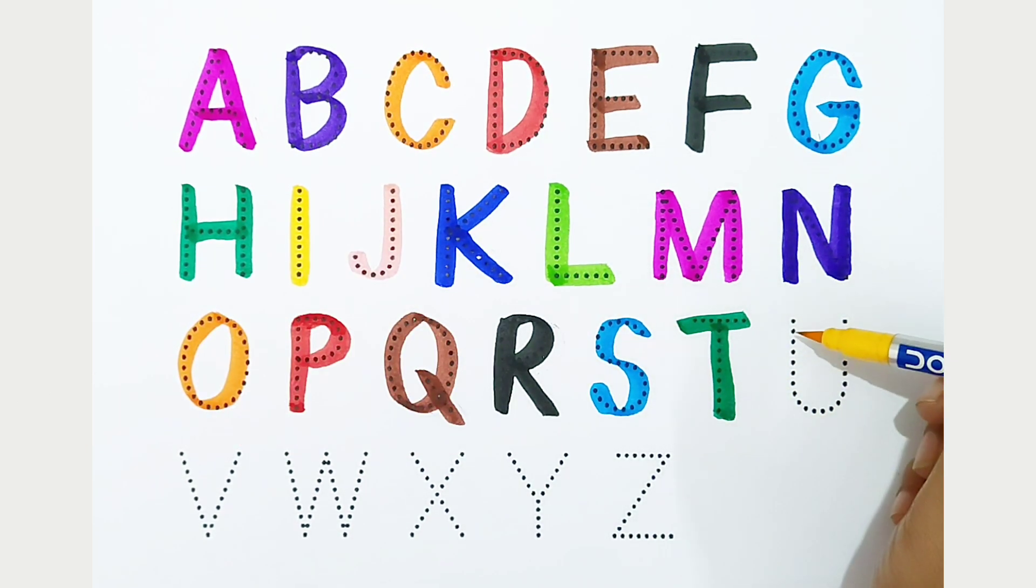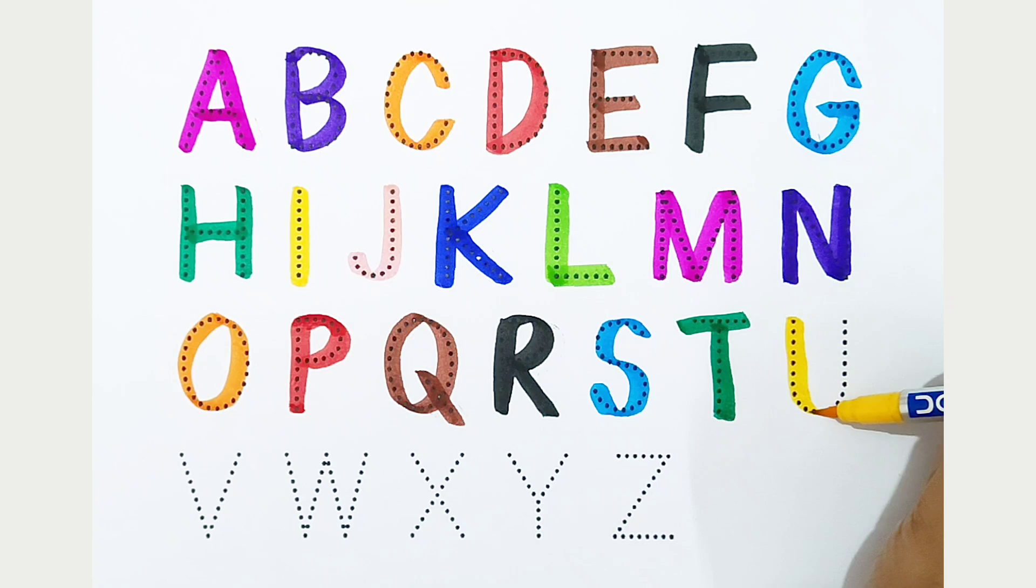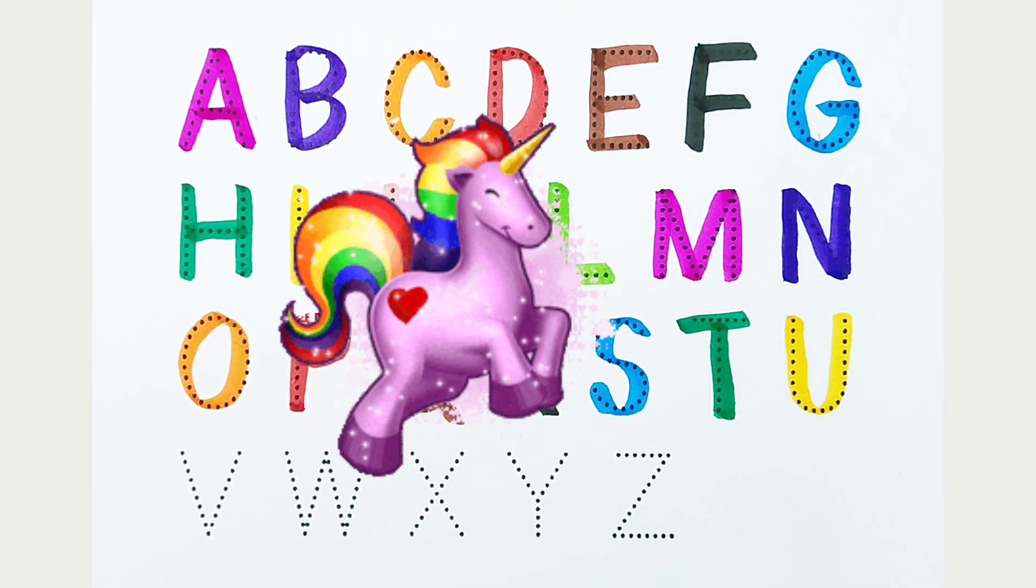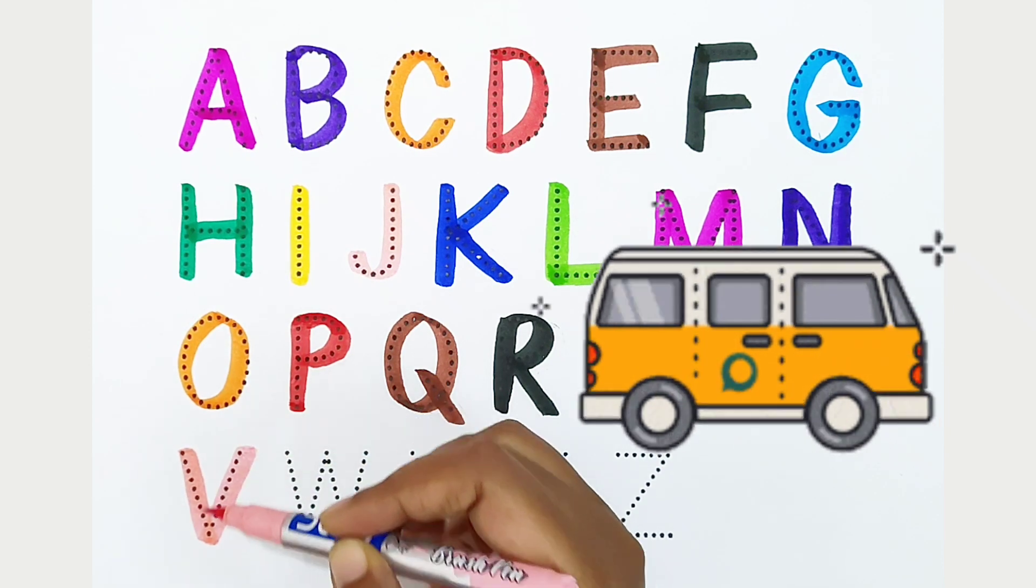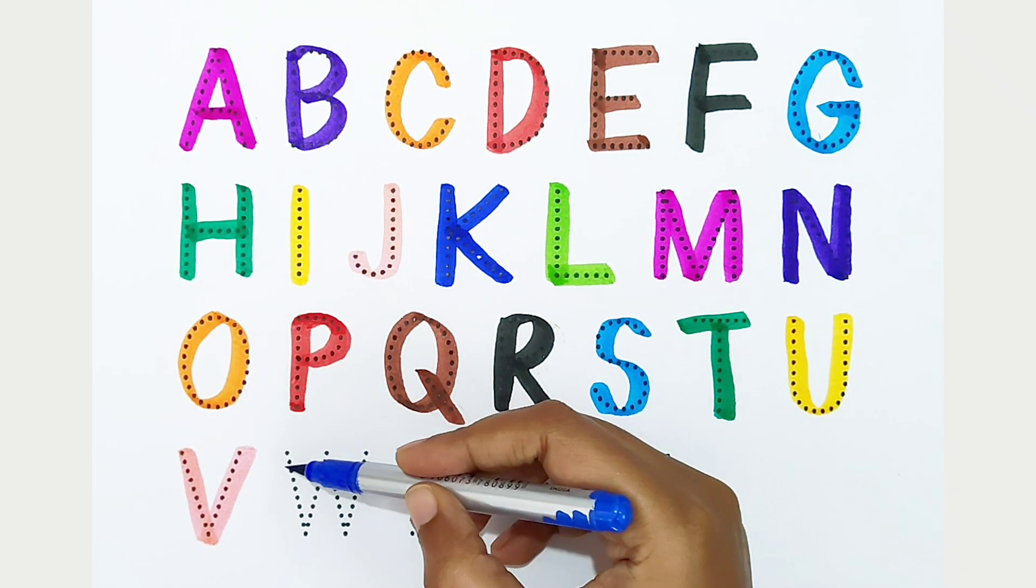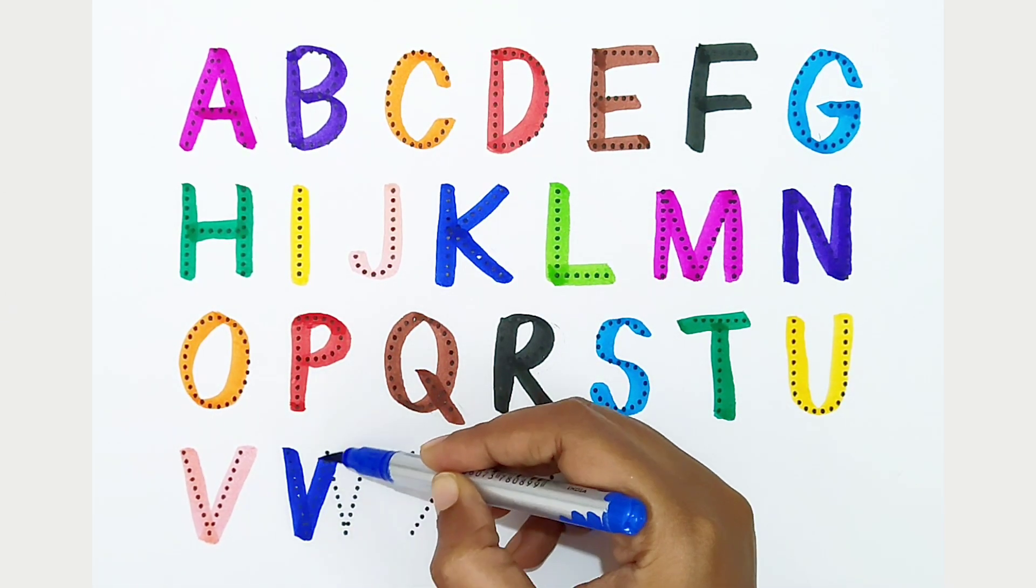U, yellow color. U is for unicorn. V, light pink color. V is for van. W, dark blue color. W is for water.